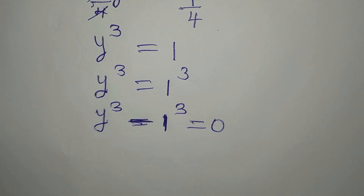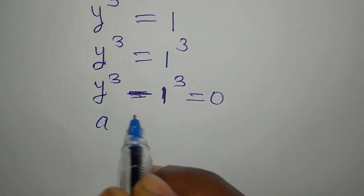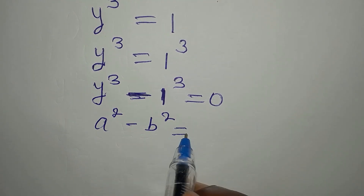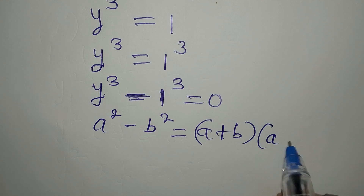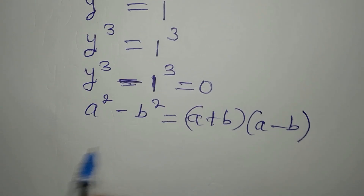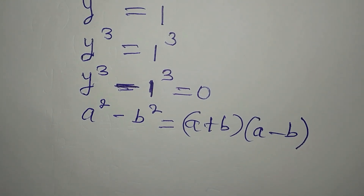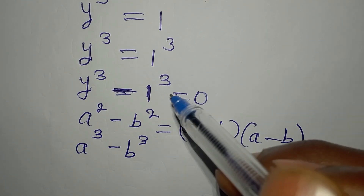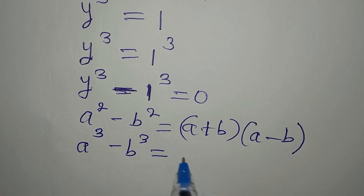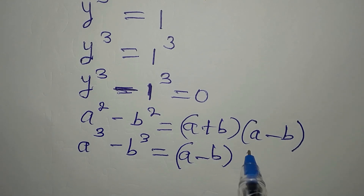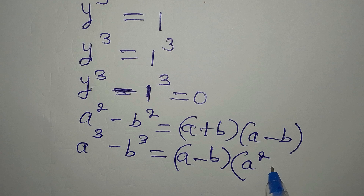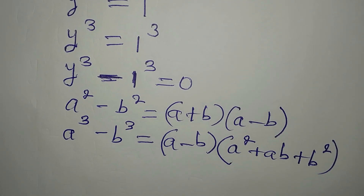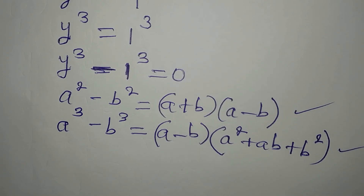Just as we have difference of two squares — where a² - b² equals (a + b)(a - b) — we can also have difference of cubes. If we have a³ - b³, this equals (a - b)(a² + ab + b²). That is the difference of cubes formula.